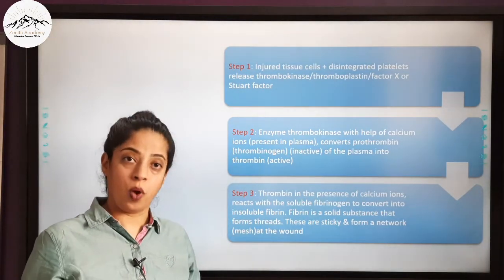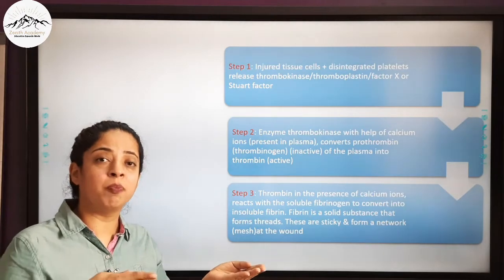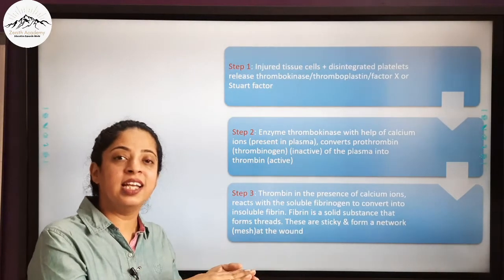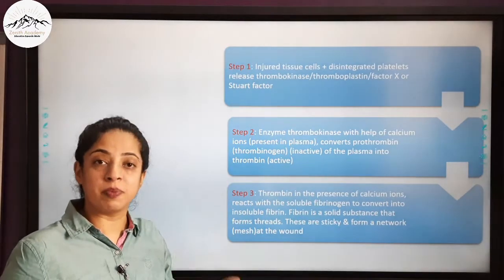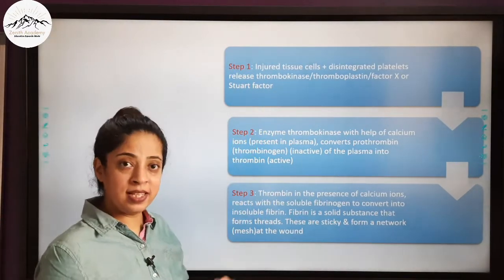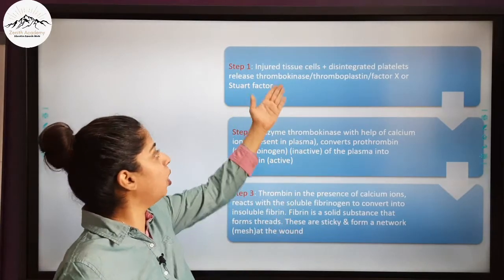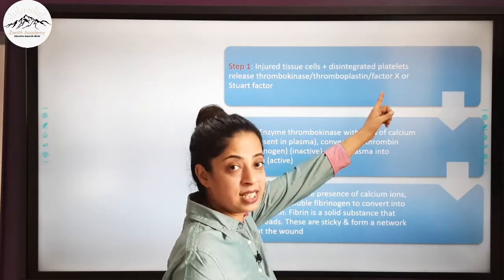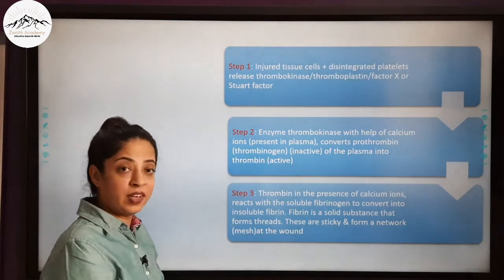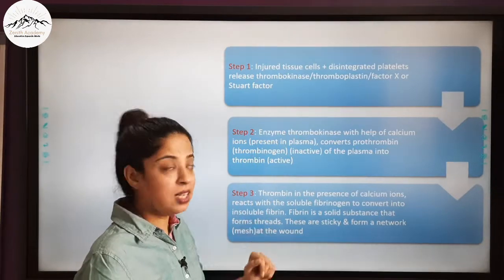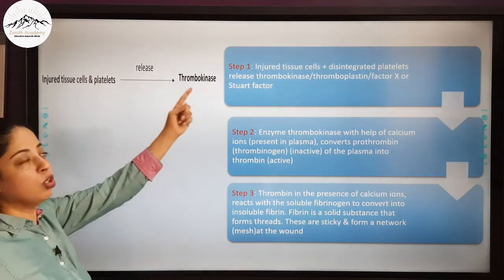In Step 1, wherever there is an injury or a cut, the tissue cells are injured. At that site, blood platelets travel quickly and disintegrate. The injured tissue cells along with the disintegrated platelets release a chemical substance known as thrombokinase — its other name is thromboplastin, also known as Factor S or Stuart factor.